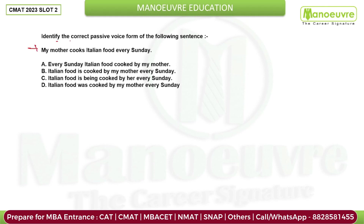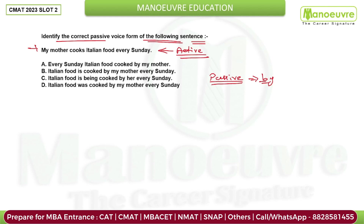The next question asks: identify the correct passive voice from the following sentences. That means the given sentence is in active voice. In passive voice, 'by' is used, and you have to join the subject using 'by'.